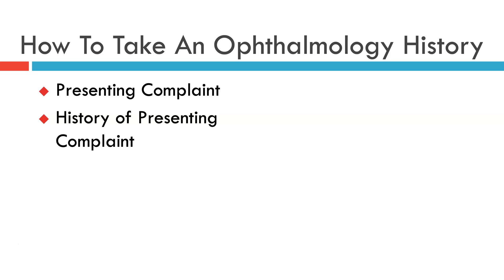We then go on to the history of the presenting complaint. In the traditional way in which we've all been trained, the history of the presenting complaint should contain details of how the complaint has changed over time, whether it is episodic in nature, whether there are any exacerbating or relieving factors, and whether there are any associated features with the complaint.